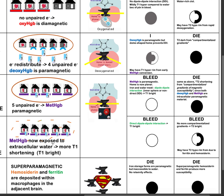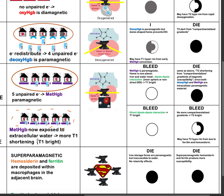When methemoglobin is now exposed to extracellular water, the cell wall is no longer there, so there is now direct dipole-dipole interaction. The T1 signal becomes more bright. With the cell wall gone, there is no longer compartmentalization of susceptibility. Hence, T2 becomes bright.